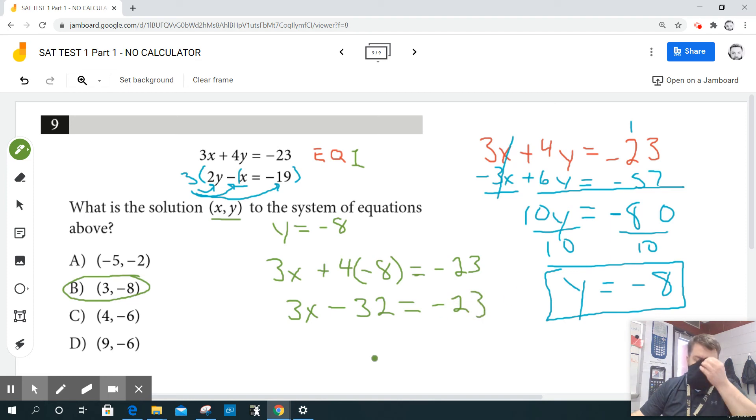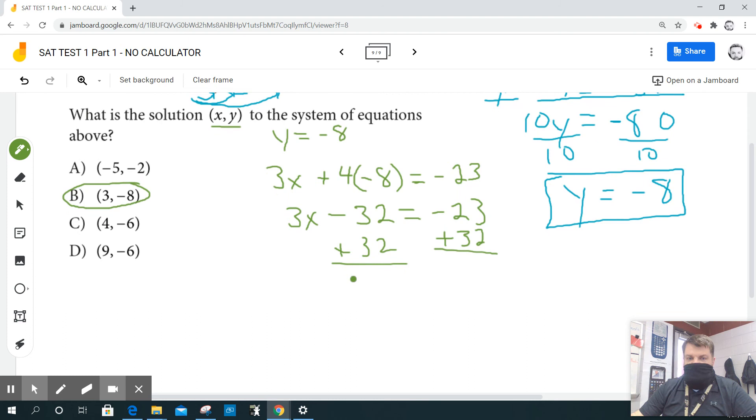So to solve for x, I'm going to move stuff away. To move the negative 32 away, I'm going to add 32 to both sides, because I'm subtracting 32 in the original equation. To move it over I got to do the opposite of subtraction which is add. Negative 32 plus 32 is zero, zero plus three x is just x.